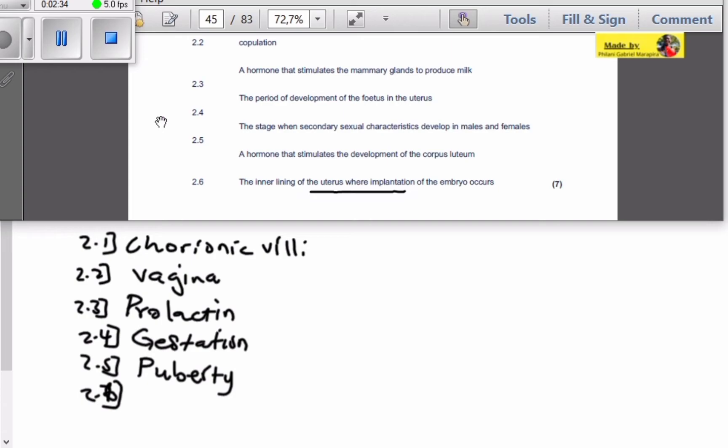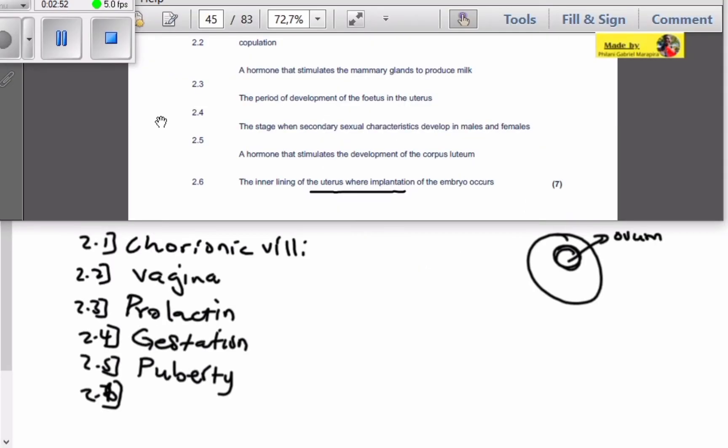So what actually happens there is that ovulation happens. When you've got a graafian follicle with a cell inside, when this cell exits out, it is called ovulation. That is the process when the ovum leaves the follicle. So what actually causes that to happen?